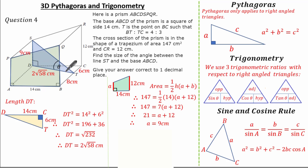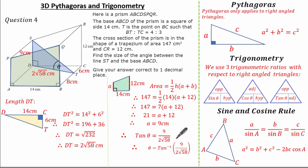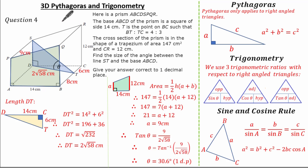Now I have my right-angled triangle with lengths to find theta. Using opposite over adjacent I'll use tan. Substituting: tan theta equals 9 over 2 root 58. Doing the inverse of tan gives the final answer for the angle between ST and base ABCD as 30.6 degrees to one decimal place.